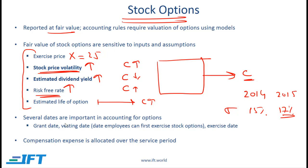When a company grants stock options there are several important dates. The grant date is obviously the date when the options are being granted. The vesting date is the date when employees can first exercise the stock options — if an employee is told he can exercise the options after four years, then four years is the vesting period and the date four years later is the vesting date. After the vesting date the employee can then exercise the options. The compensation expense is allocated over the service period, so if the value of options is $100 million over a four-year service period, we allocate this expense equally over the four years.